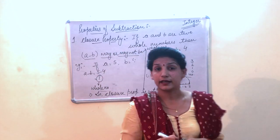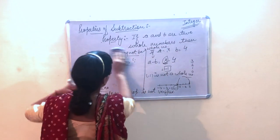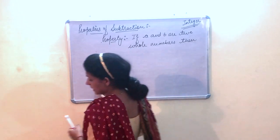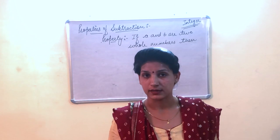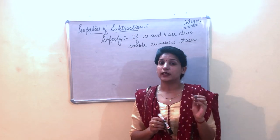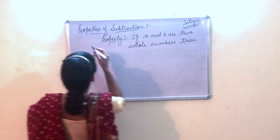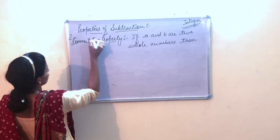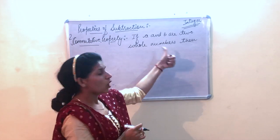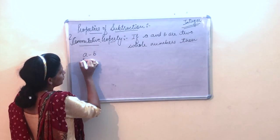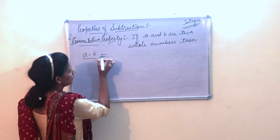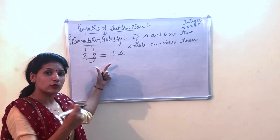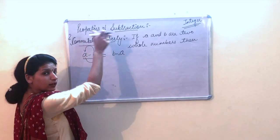Now let's move to our second property, that is the commutative property. In the commutative property, if a and b are two whole numbers and we change the order of the numbers, the answer should remain the same. So we check whether a minus b is equal to b minus a.